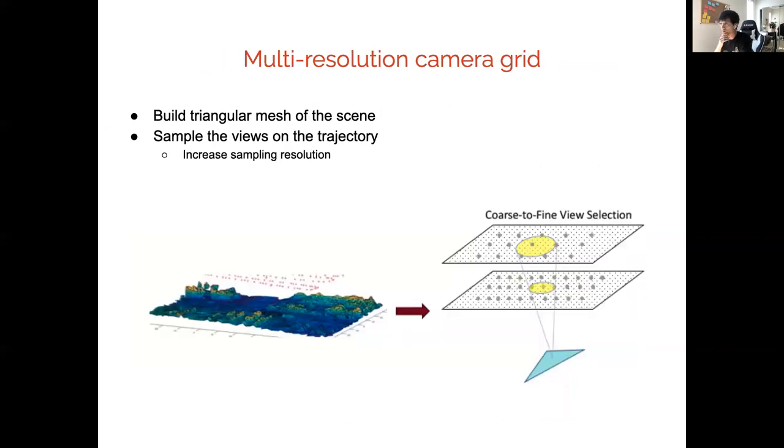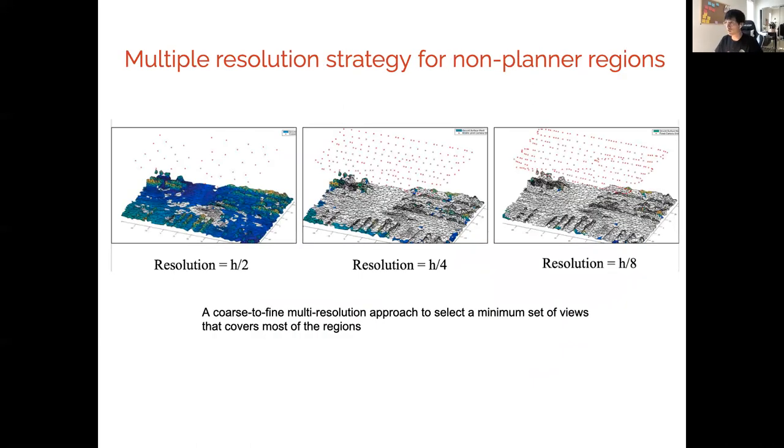Therefore, we propose a multi-resolution camera grid approach where we initially build a triangular mesh of the scene. For each triangle on this mesh, we sample views on the trajectory with different resolution, increasing the sampling resolution. That's why we call this a coarse to fine view selection method.